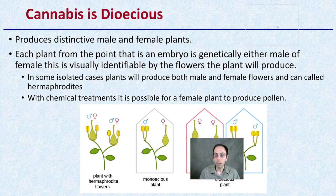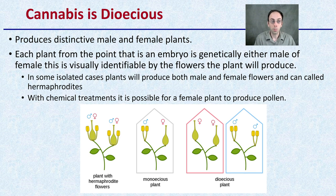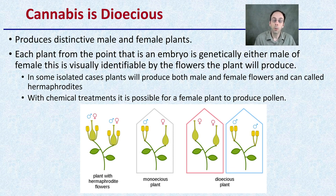Cannabis is dioecious, meaning it produces distinctive male and distinctive female plants. Each plant from the point that it is an embryo is genetically either male or female, and it's visually identifiable by the flowers it will produce. In some isolated cases, plants will produce both male and female flowers — these are called hermaphrodites, or hermes. With chemical treatments, it is possible for a female plant to produce pollen and also for a male plant to produce female flowers.